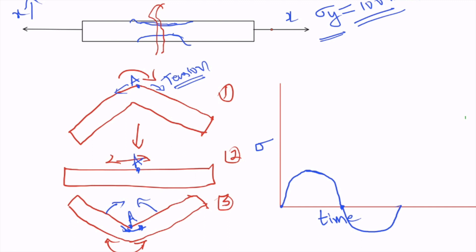To summarize the key definitions: fatigue loading means cyclic or dynamic loading where stress is continuously changing in magnitude as well as direction. Fatigue failure is the failure of a material due to fatigue loading before it reaches its yield point. This is a critical point — fatigue failure occurs below the yield point of the material. Remember these three points: fatigue failure, fatigue loading, and the importance of fatigue loading.